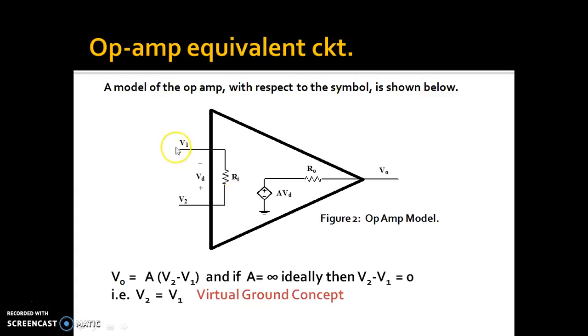Here you can see that the two input terminals are connected to an input stage. The output voltage is actually a voltage dependent source. This depends on the difference between two input terminal voltages. R is the output impedance. So, we can write V0 equal to A(V2 minus V1) which is the difference voltage at the two terminals. And if we know that the ideal amplifier has an open loop gain of infinity, then we will have V2 minus V1 equal to 0. That means V2 will be equal to V1 in ideal case.